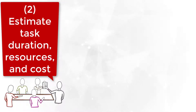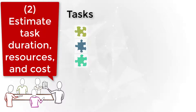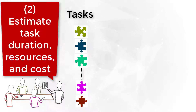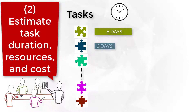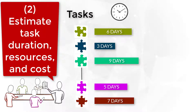Step 2: estimate task duration, resources and cost. Time and resource estimates are a big part of the schedule because they help to determine how long tasks should take. The estimating activity is very critical to the project. The project manager should try to get the best advice from experienced people on the job and check the actual duration of previous projects.